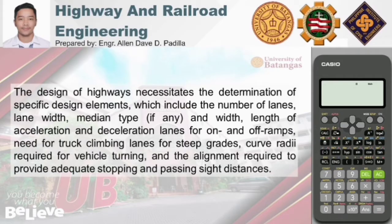We determine whether a separate lane is needed for climbing trucks, especially for steep grades. Curve radii required for vehicle turning, and the alignment required to provide adequate stopping and passing sight distances. So vehicle performance characteristics has something to do with all of these design elements.